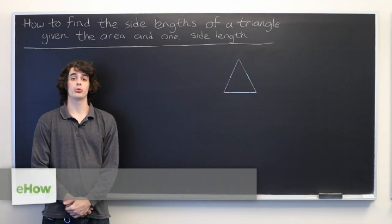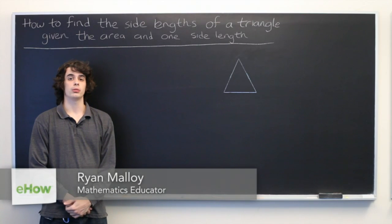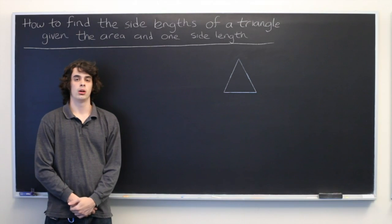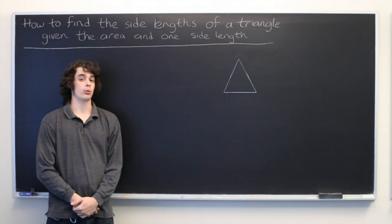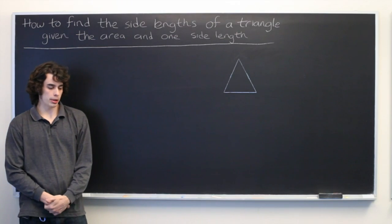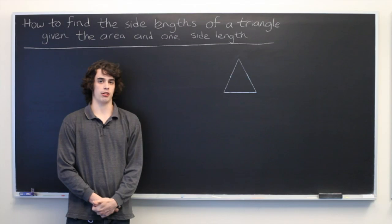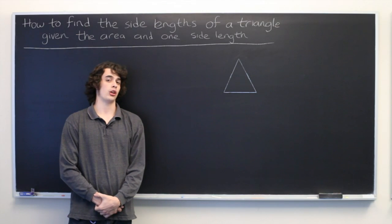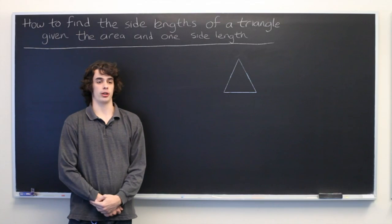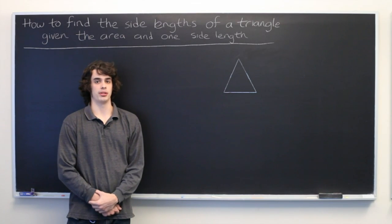Hi there. My name is Ryan Molloy. In this video, we are going to discuss how to find the side lengths of a triangle when all we know is the total area and one of the side lengths. Now, you might think that this is enough information to uniquely characterize a triangle, but in general that's not true. It is possible for multiple distinct triangles to have the same area and for one of their side lengths to be the same.